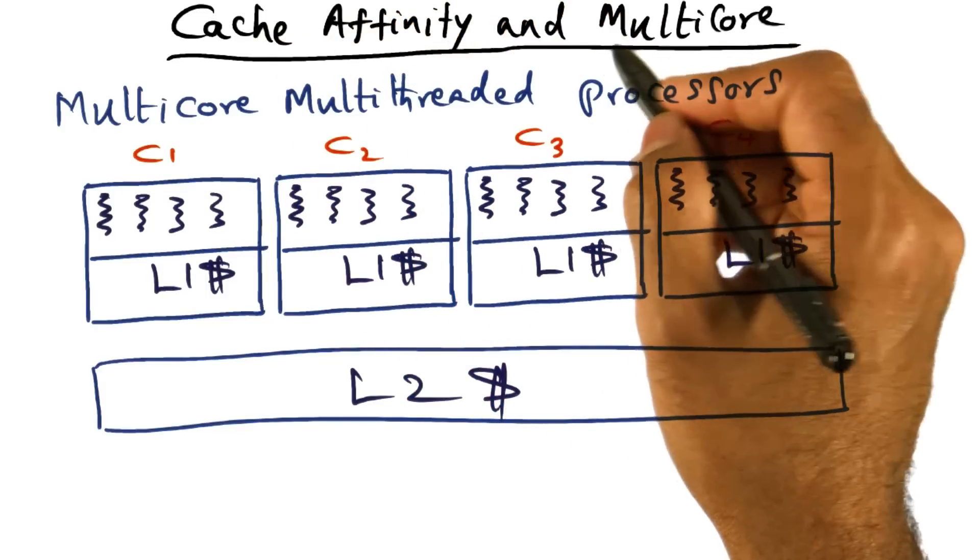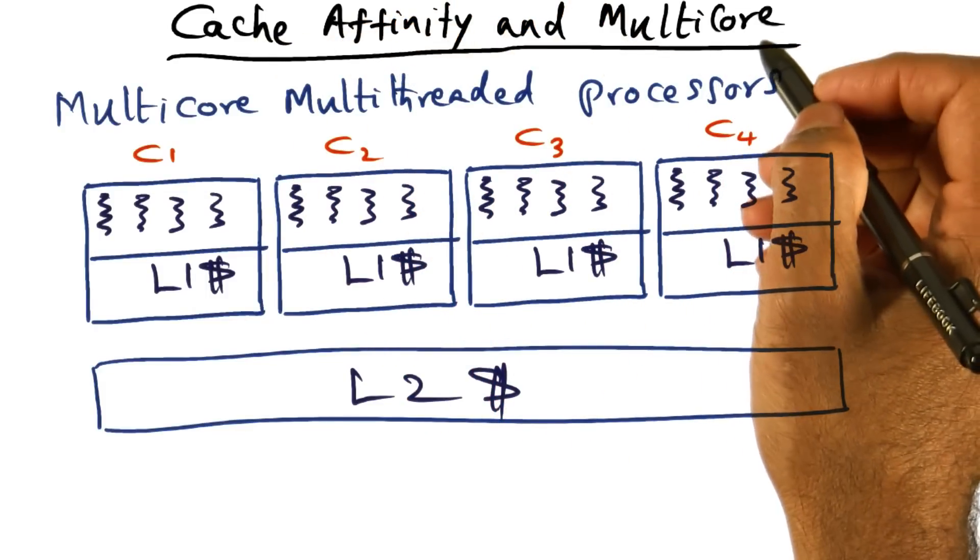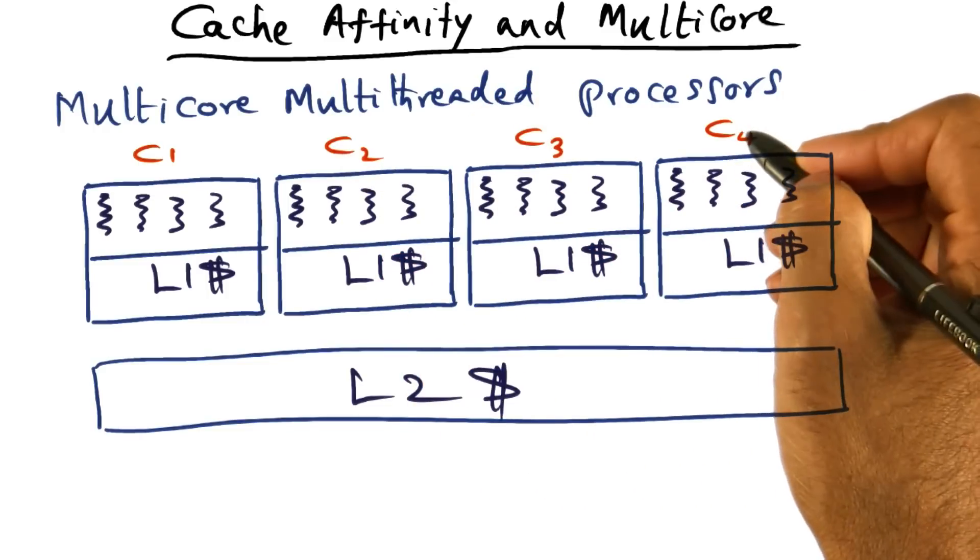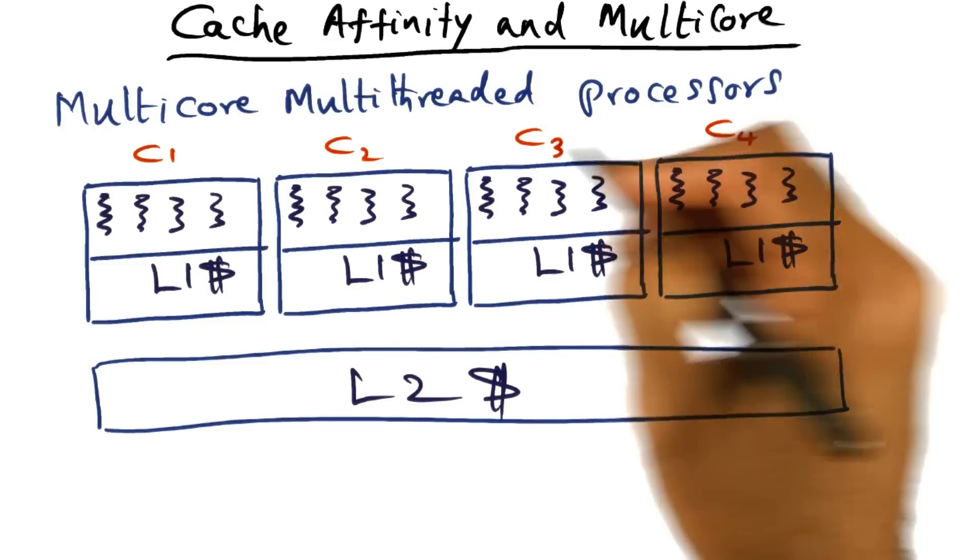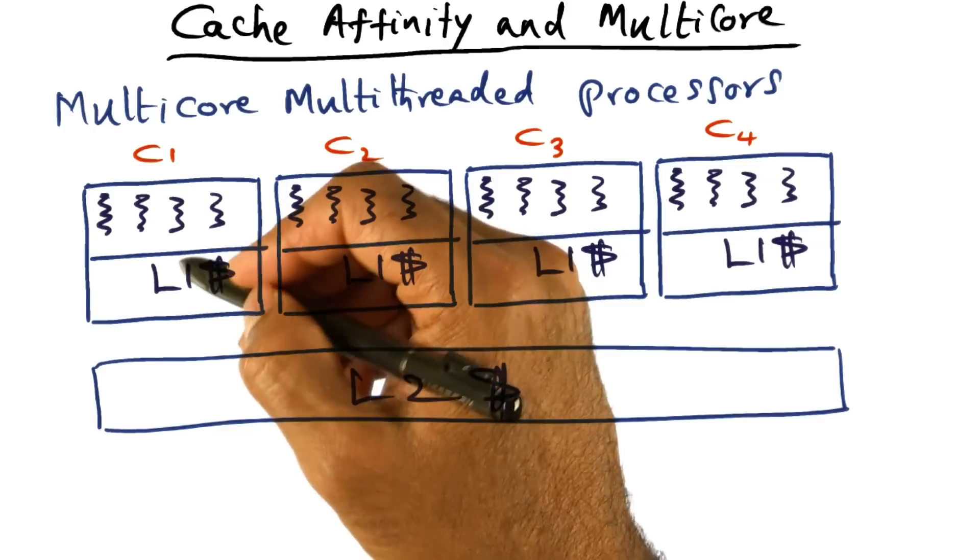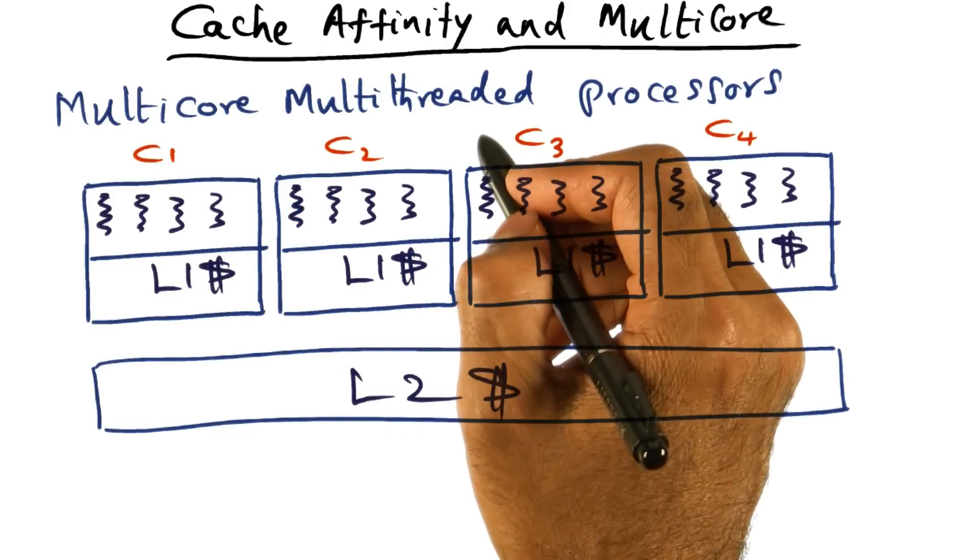So let's talk about cache affinity and modern multi-core processors. In modern multi-core processors, you have multiple cores on a single processor. And in addition to the multiple cores that are on a single processor, the processors themselves are also hardware multi-threaded.